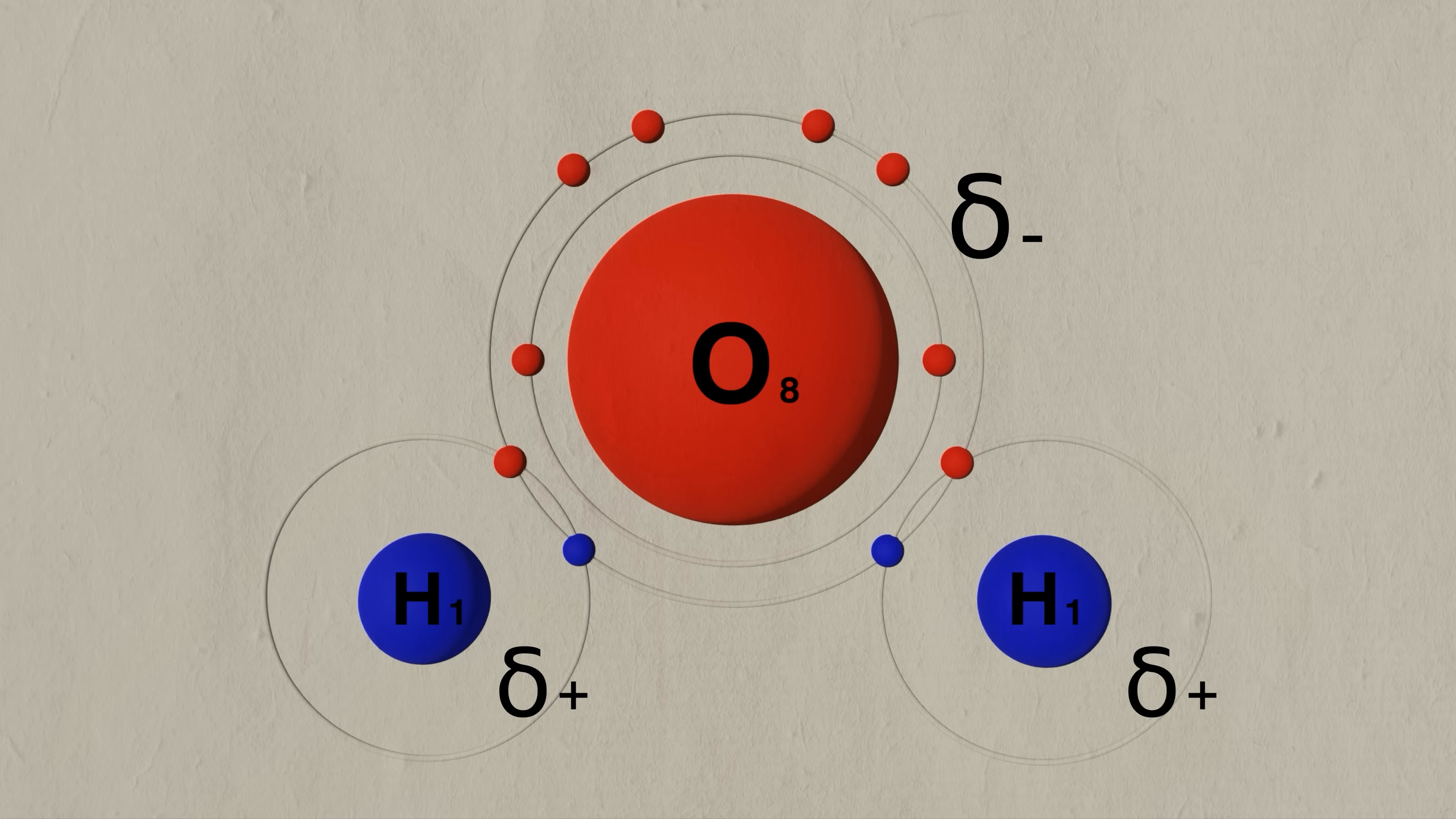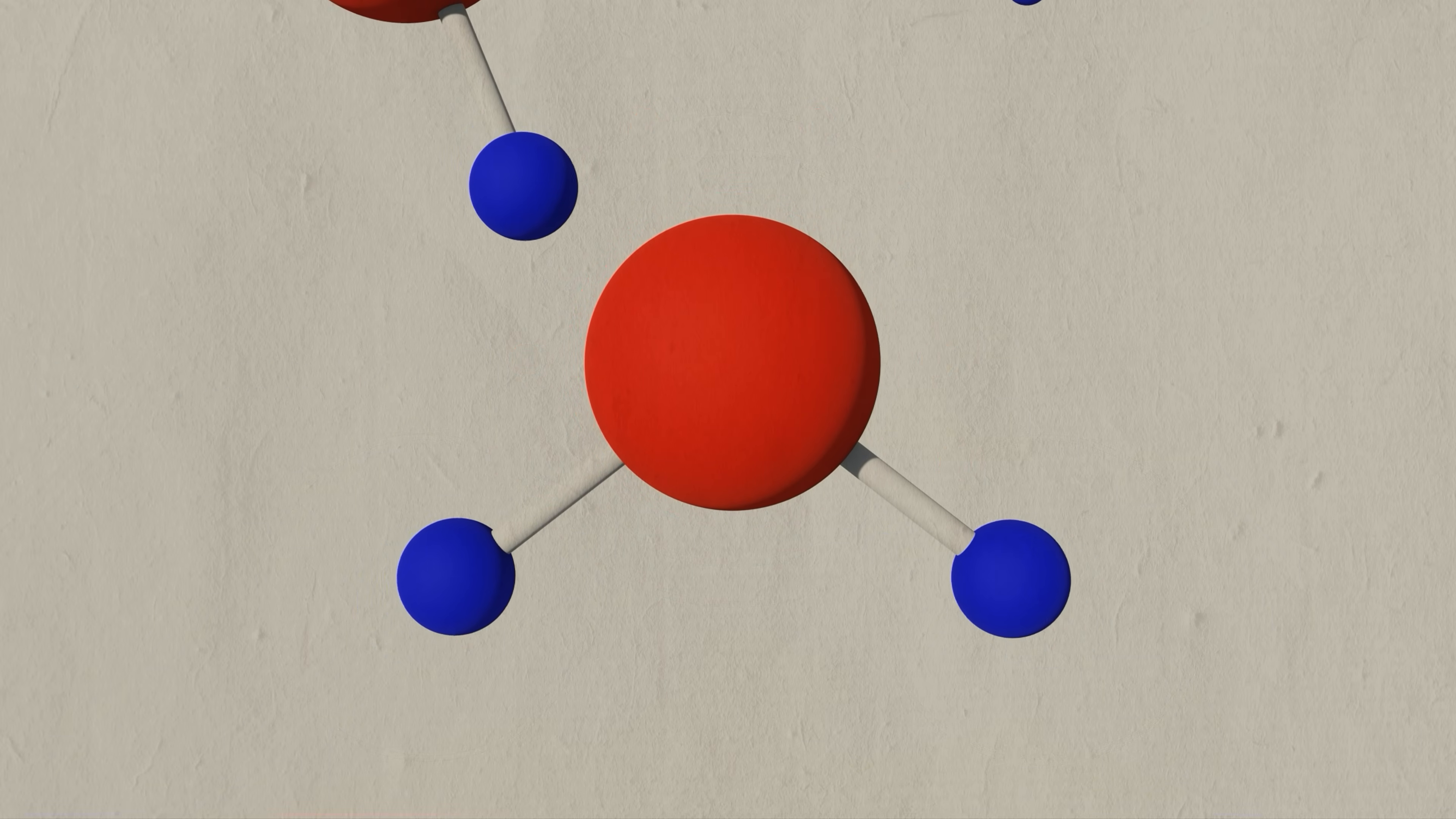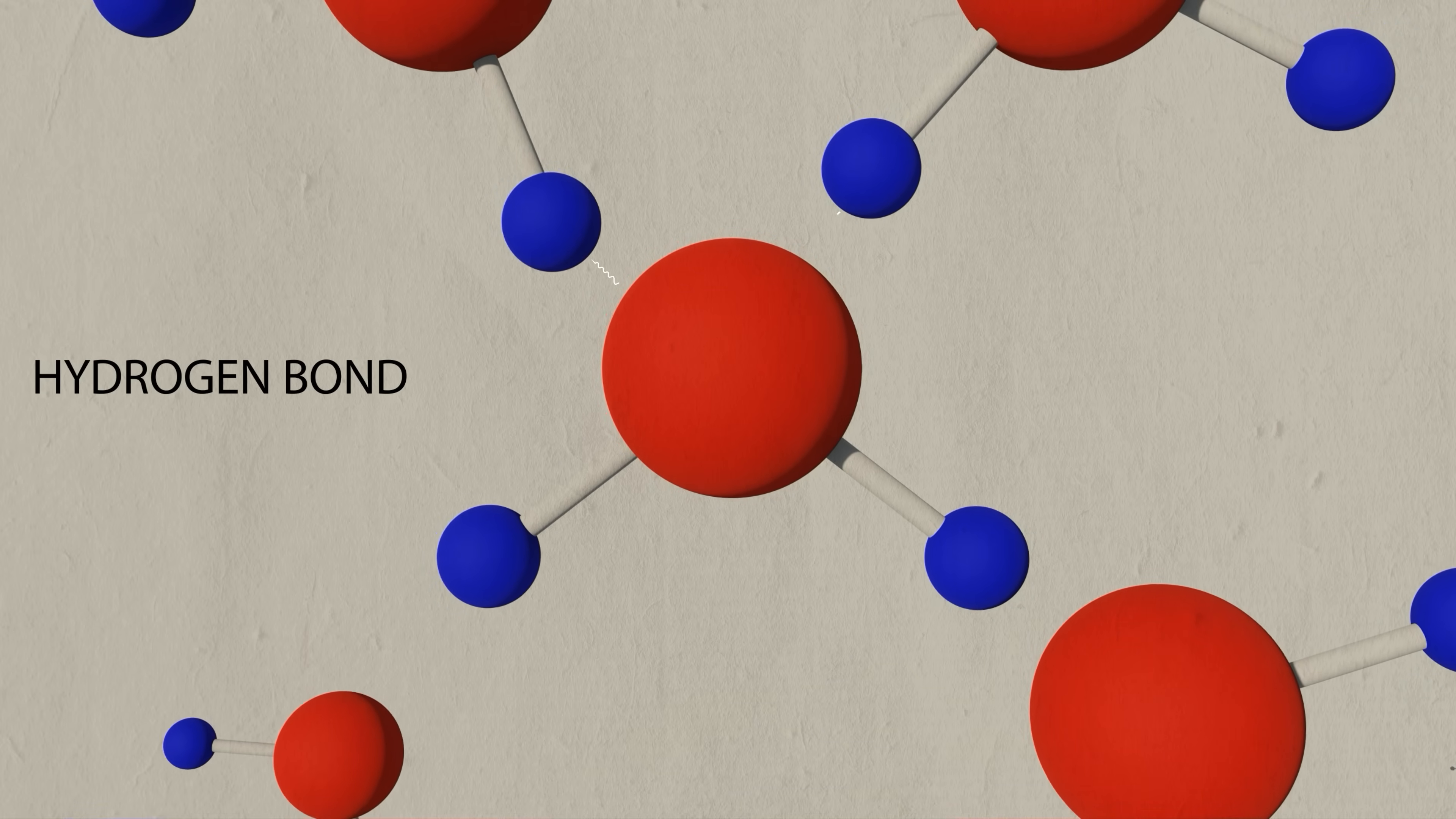Because of these opposite charges, H2O becomes a polar molecule. And because it's a polar molecule, it now attracts other water molecules that are also polar. These oppositely charged atoms now form bonds that are called hydrogen bonds, with up to four other different water molecules.